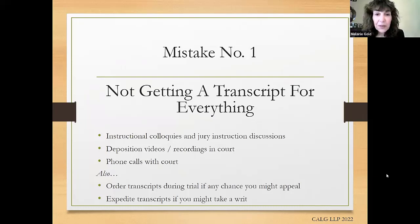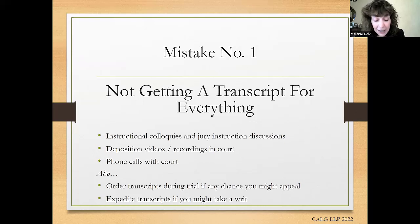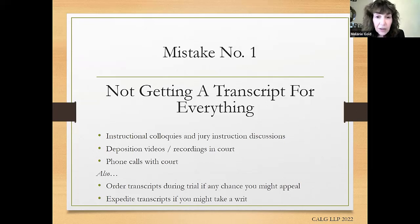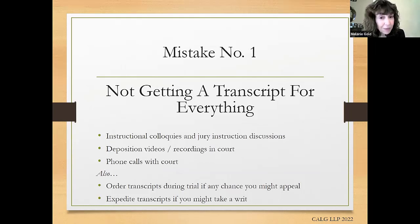The first mistake is not getting a transcript for everything — this is probably the most common mistake that courts of appeal see. The need to ensure a complete transcript flows from the fundamental appellate rule that a judgment or order is presumed correct. Regardless of who had the burden in the trial court, the appellant has the burden to affirmatively show error. If a fact or objection is not on the record, the burden cannot be met, and that fact does not exist.